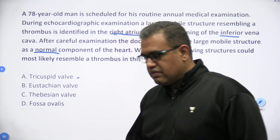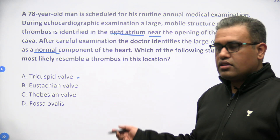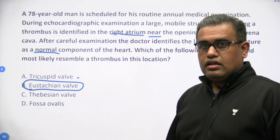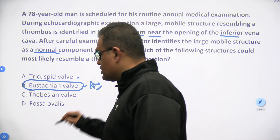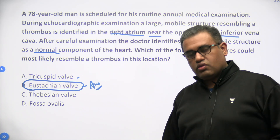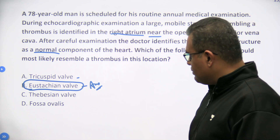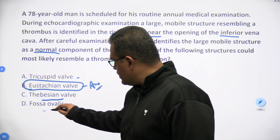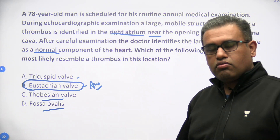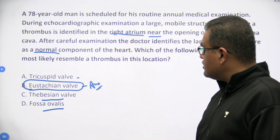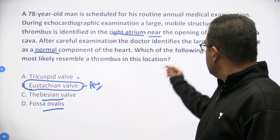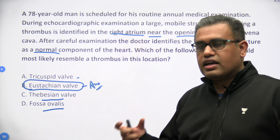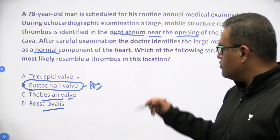Options are: tricuspid valve, Eustachian valve, Thebesian valve, or the fossa ovalis. The tricuspid valve is between the RA and RV — it won't appear like a thrombus. The Eustachian valve is actually the remnant of the IVC valve — a rudimentary structure. Initially during embryology it was a valve for the IVC, but it is no longer needed. Thebesian valves are small valves around the coronary sinus opening. The fossa ovalis is in the interatrial septum. The Eustachian valve is the answer here — it is a normal component of the heart, near the opening of the IVC, and it may appear slightly bigger in structure and resemble a thrombus on echocardiography.